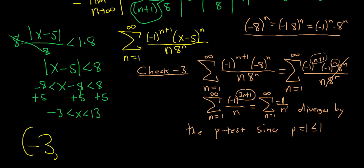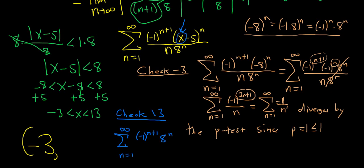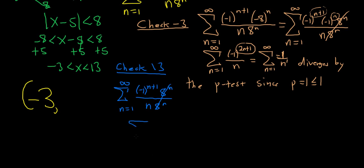Now let's check x = 13. We plug 13 in for x: the infinite sum from n=1 to infinity of negative 1 to the n+1, and 13 minus 5 = 8, so we get 8 to the n over n times 8 to the n. The 8 to the n's cancel, leaving negative 1 to the n+1 over n. This converges via the alternating series test.